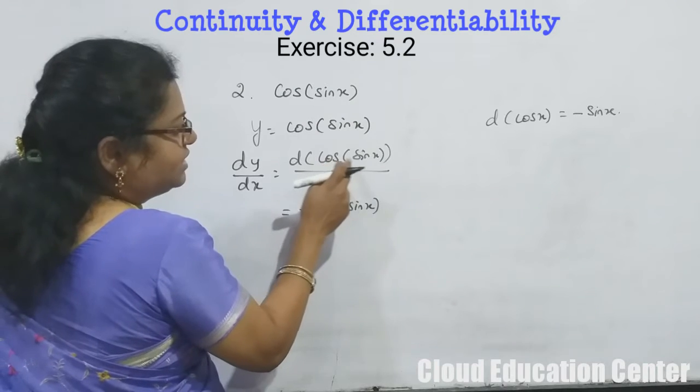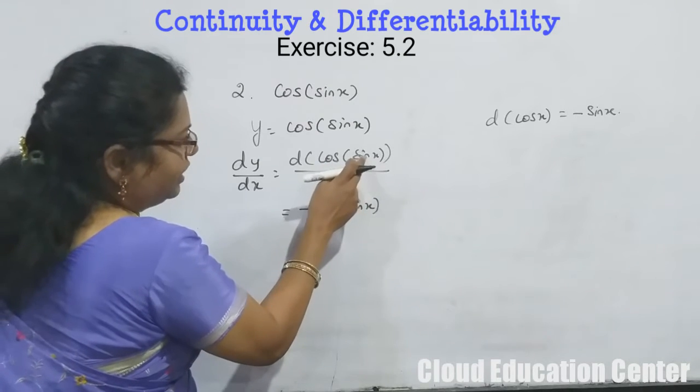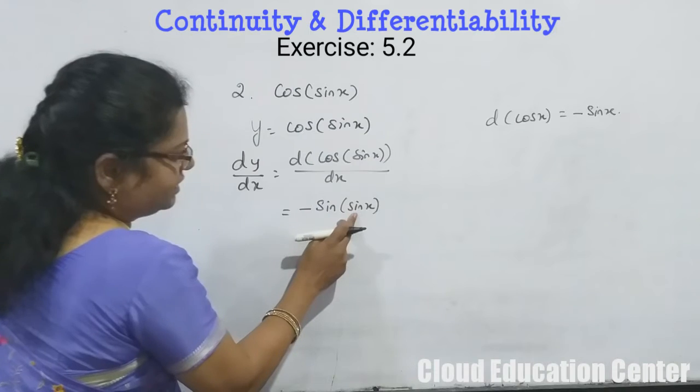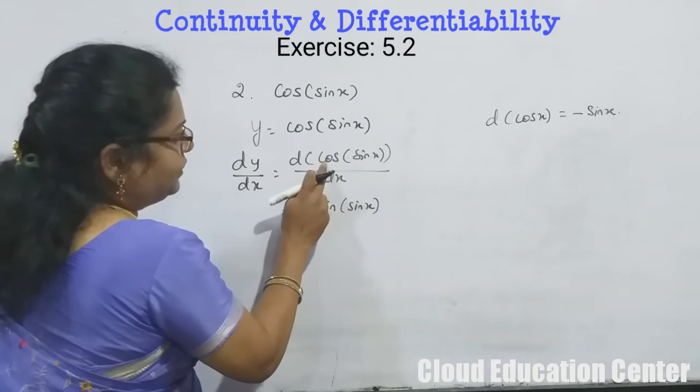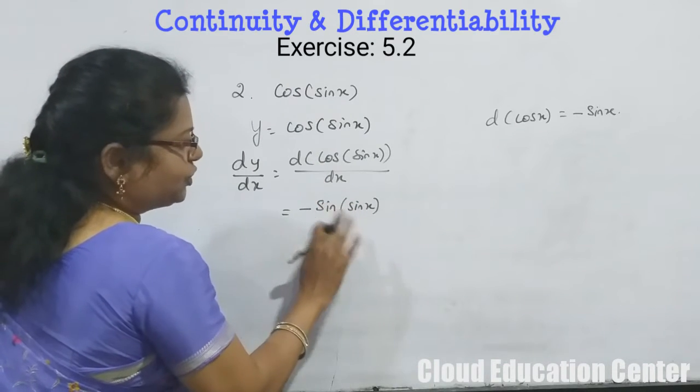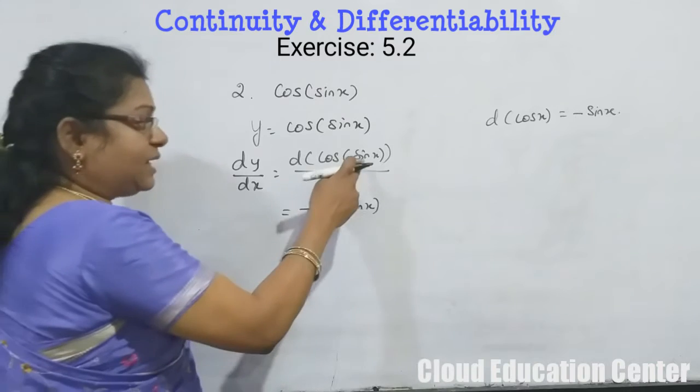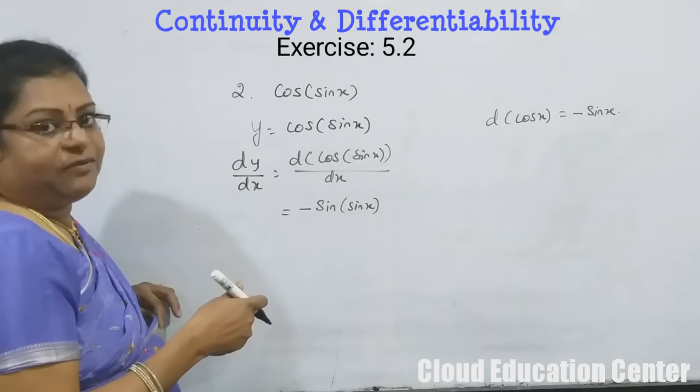But in this case x is not there, instead we have sin x. So instead of writing x, we will write sin x. Now the differentiation of cos x is completed. We can't stop here because sin is also a differentiable function.